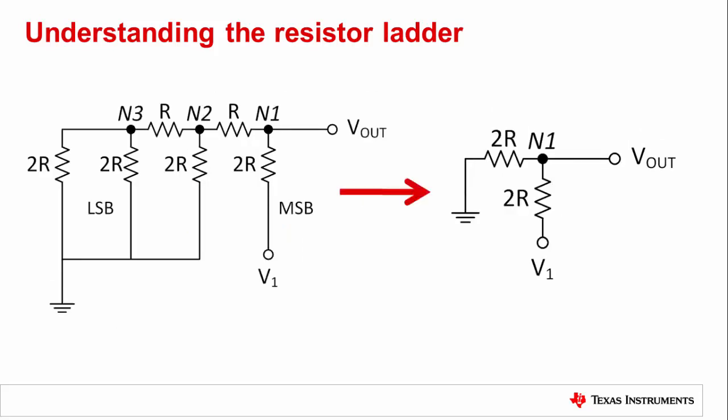First, let's start with the contribution from V1. All other voltage sources other than V1 are shorted to ground as part of the superposition process. We know that the equivalent resistance looking back into the ladder from any point in the ladder is 2R, something you can prove as an exercise. We will use that assumption to calculate the voltage contribution at the output as V1 over 2, as evidenced by the simple resistor divider created by the equivalent resistance looking back into the ladder.